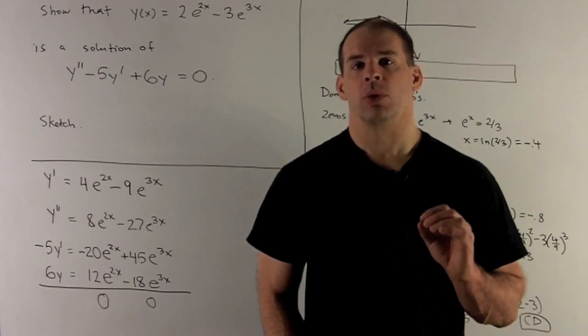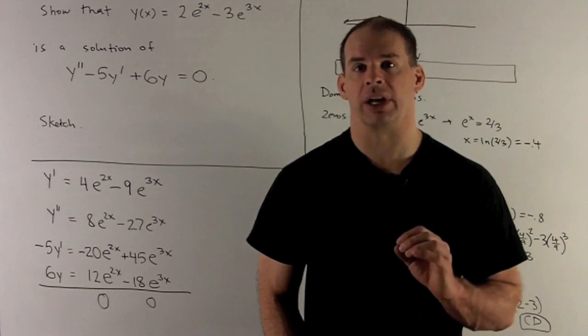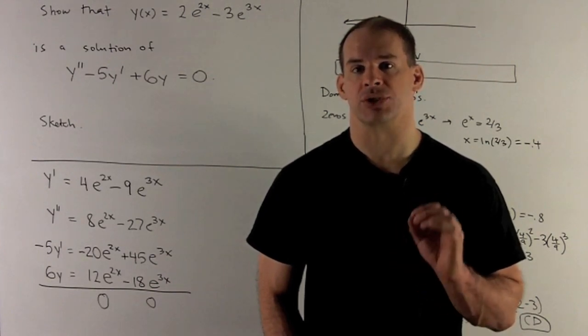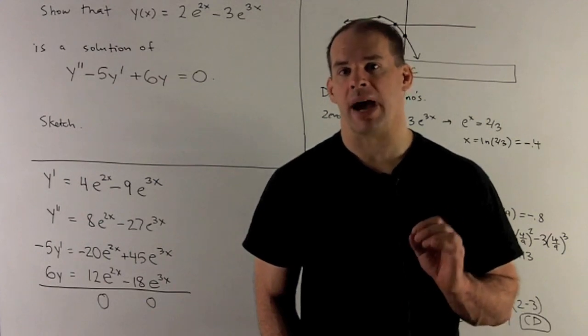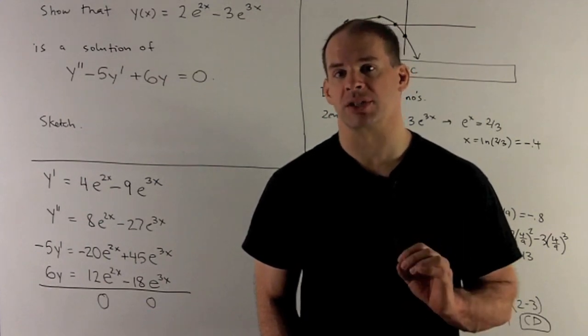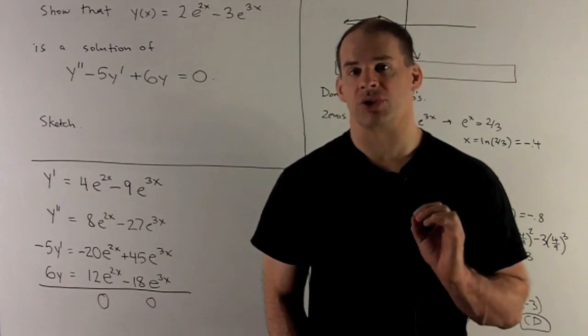Show that the function y(x) = 2e^(2x) - 3e^(3x) is a solution of the differential equation y'' - 5y' + 6y = 0. Then sketch the graph.